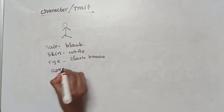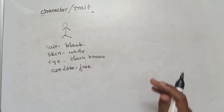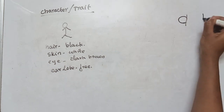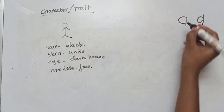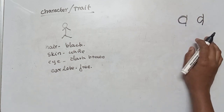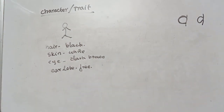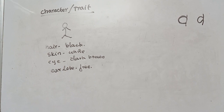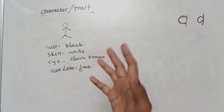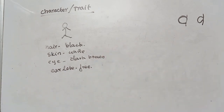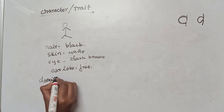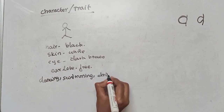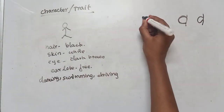Looking at the ear lobe — if you look at this chart, there is attached to the ear and there is a gap that is free. If I look at my hair lobe, that is free. So my hair is black, my skin is white, my eye is dark brown, and the hair lobe is free.